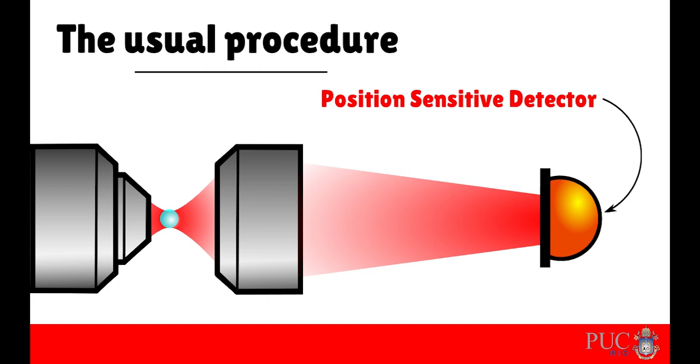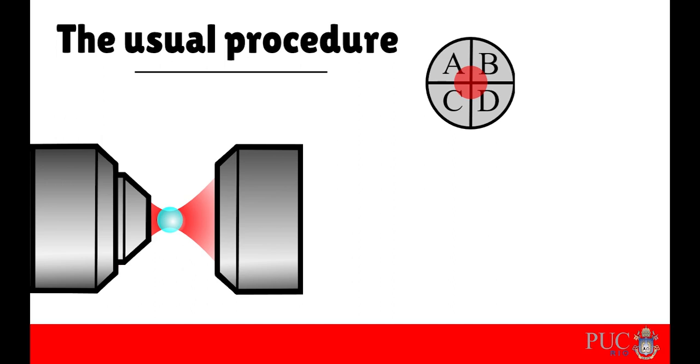A position-sensitive detector usually consists of four separate silicon detectors, here named A, B, C, and D.